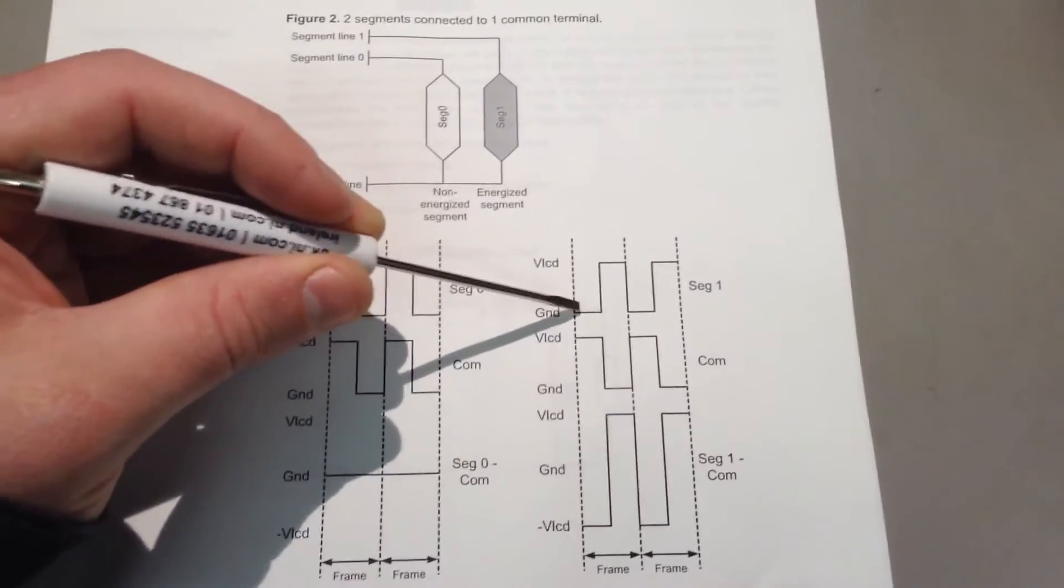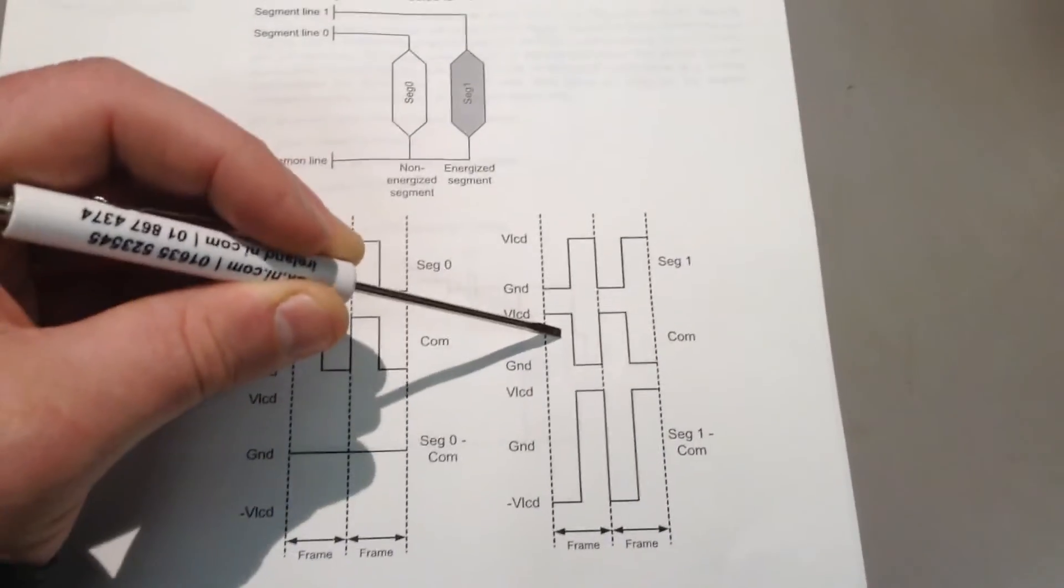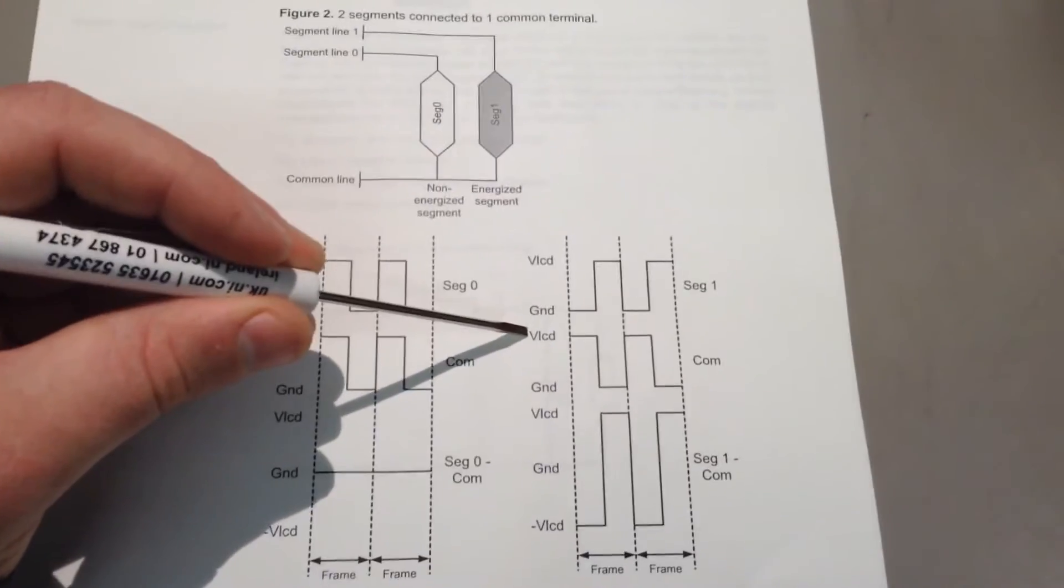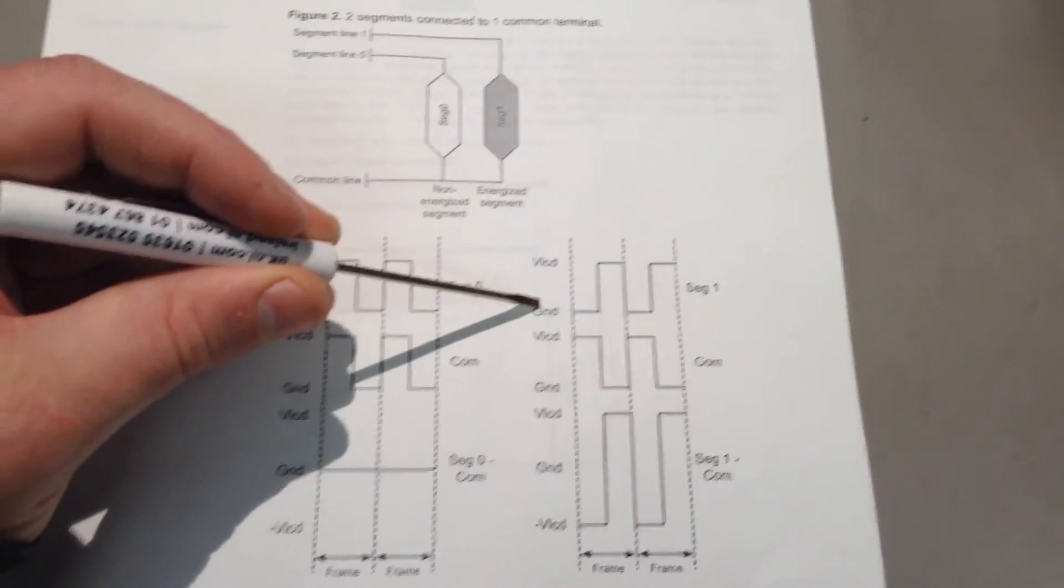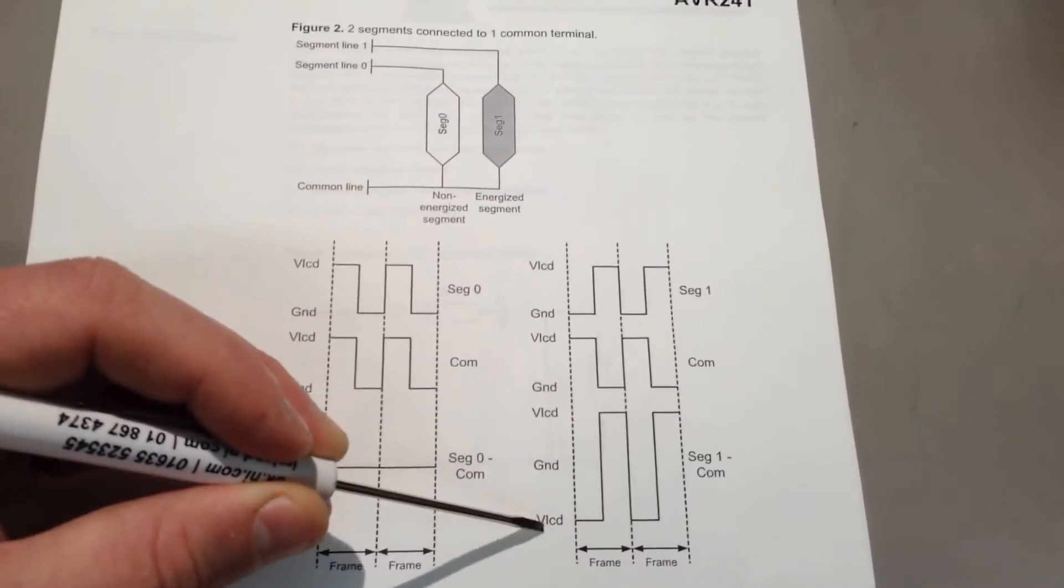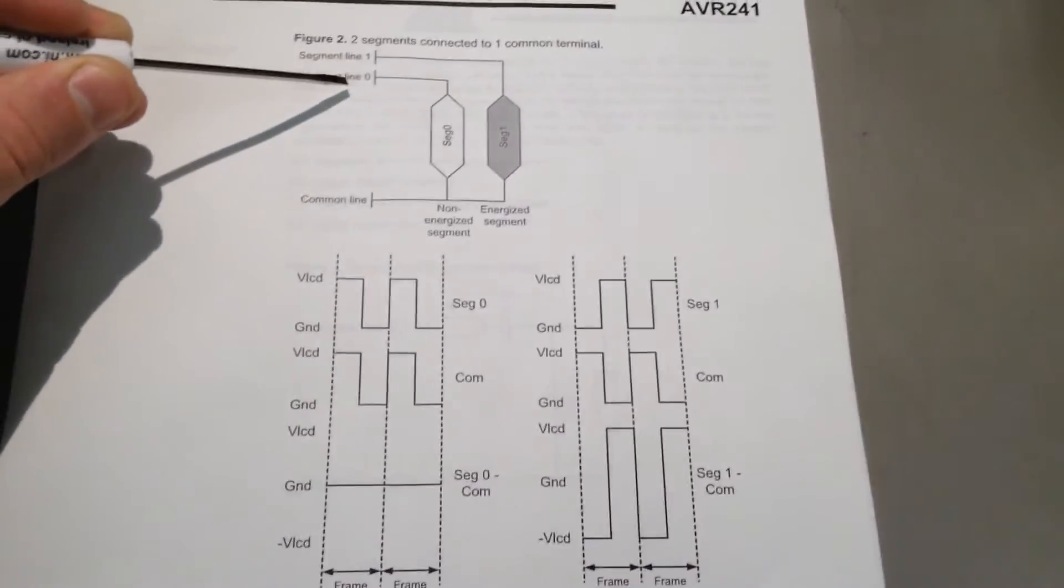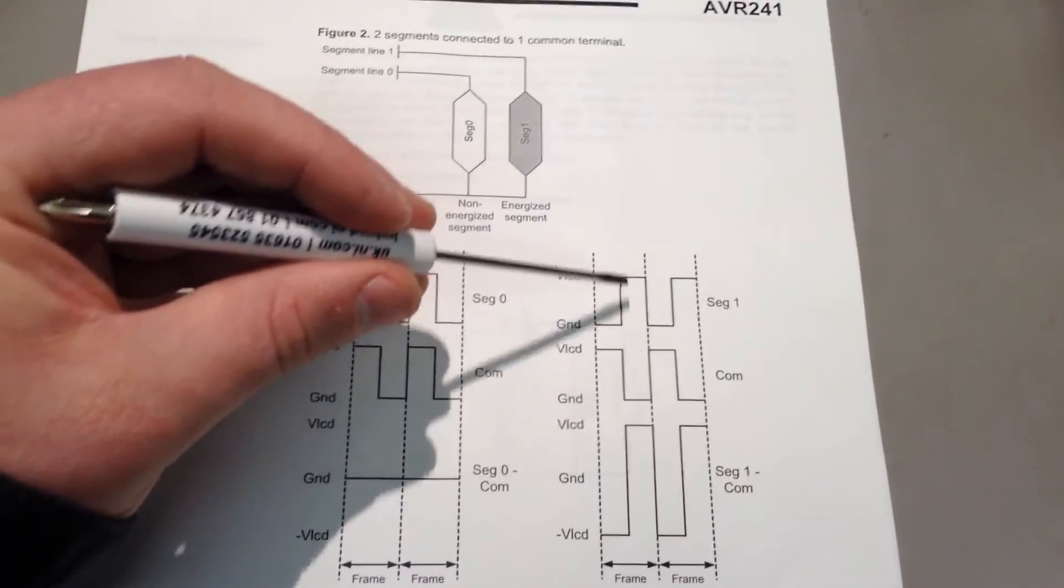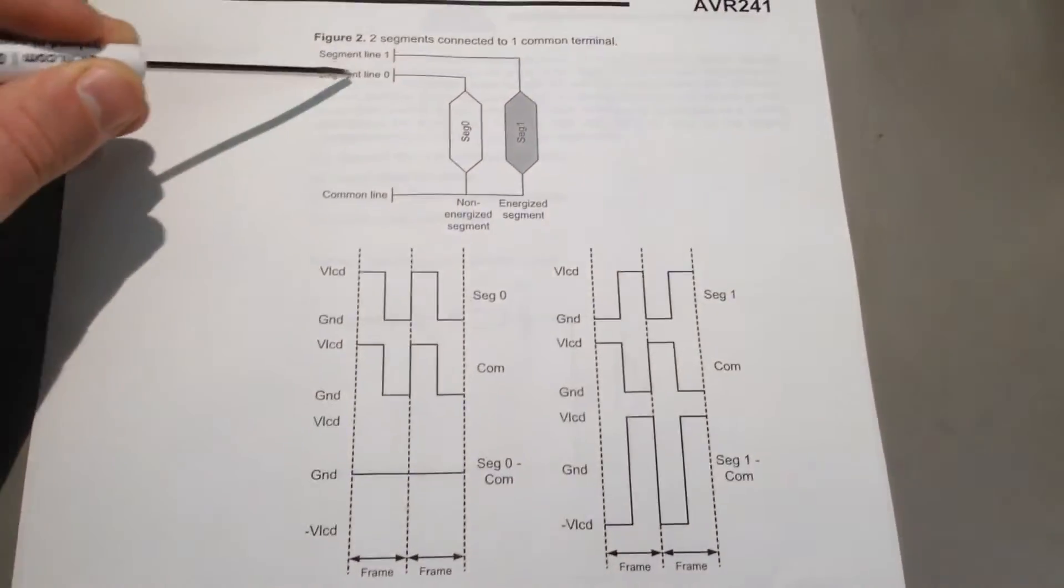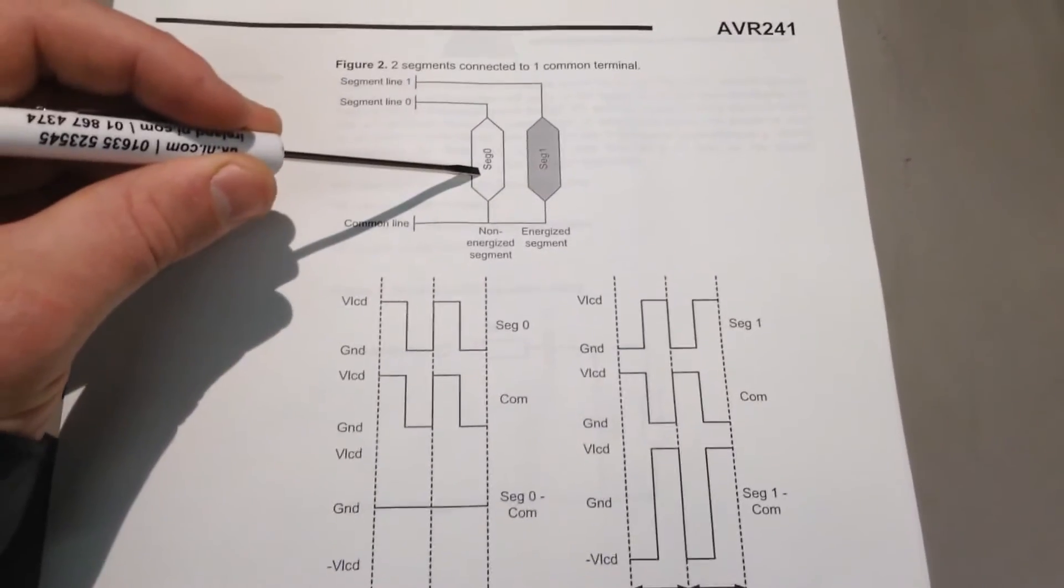So what if you want the segment to light? Well, if you shift the phase of one of these signals, so say like we shift the phase of segment 1 to 180 degrees with reference to the signal applied to com, then we get ground and VLCD. So we'll call VLCD 5 volts. So 0 volts minus 5 volts is minus 5 volts. We've got current flow going from the com line into segment line 0. And then if we do 5 volts minus 0 volts, we get 5 volts. So we've got current now flowing from the segment line into the com line. And then it just goes backwards and forwards. If you do this really fast, you hardly know that that's turned on. I thought that was quite clever.